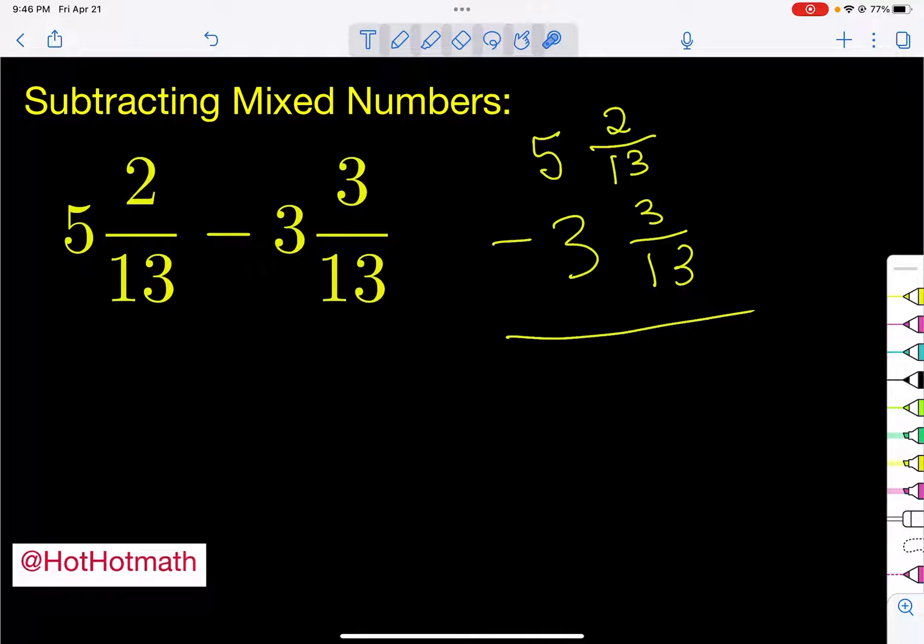The next thing we check is: is this number smaller than this number? Because we need to subtract 3 thirteenths. We can't take 3 thirteenths from 2 thirteenths. So how do we fix that? In any subtraction when some things are happening that we need to fix, we are going to use a technique called borrowing.